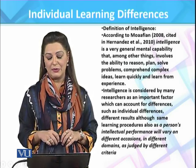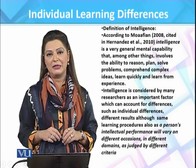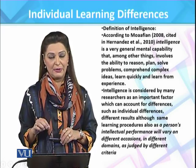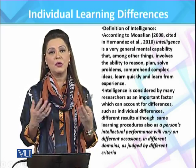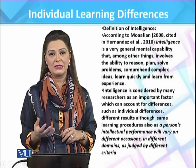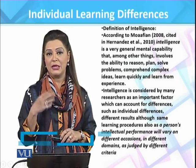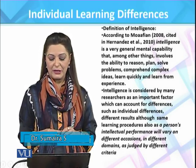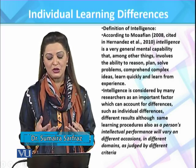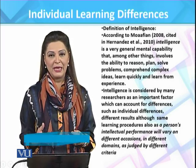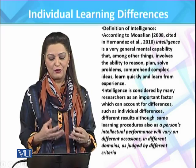The first definition is given by Morphian, where he says that intelligence is a very general mental capability. This particular capability, among other things, involves the ability to reason out things, to rationalize things, to plan, solve problems, comprehend, develop understanding of complex ideas, learn quickly and learn from experiences.